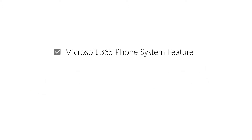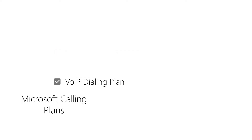Once you've ensured that your Microsoft 365 license includes the phone system feature, it must be paired with a dialing plan from a telecommunications provider. Microsoft's own calling plans are available through vendors on CalNet, but you may also want to consider direct routing plans available from other CalNet vendors.